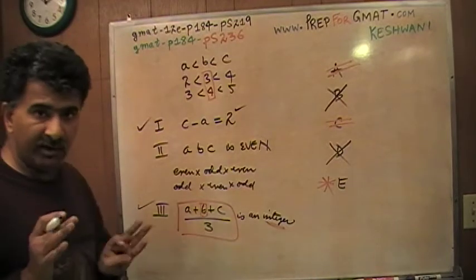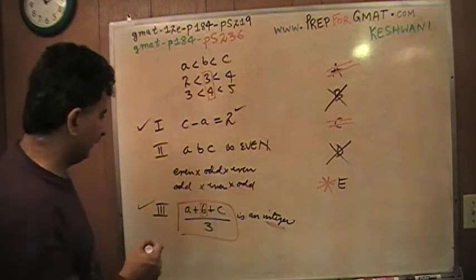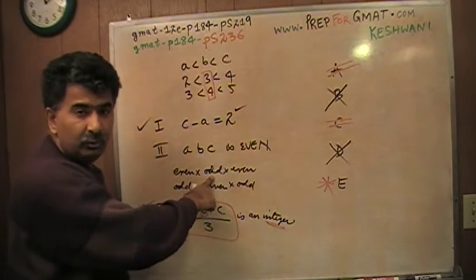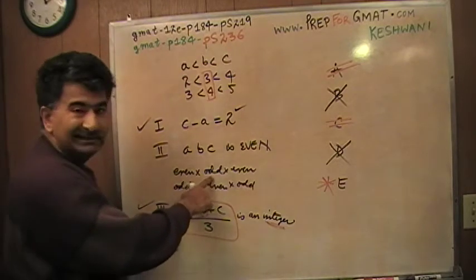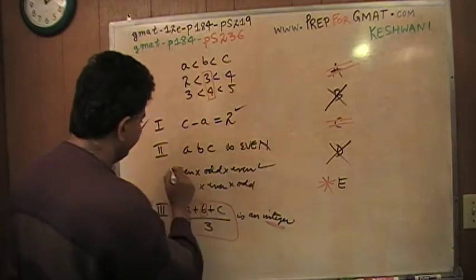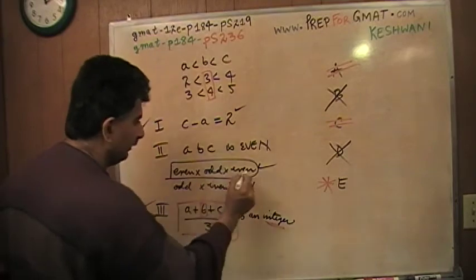I'm going to quickly explain to you just for the learning purposes that this in fact is even. Because even times odd, think of this as 2 times 3. 2 times 3 is 6. So even times odd is even. And even times even is going to be even. This is true. It is even. This equals even.